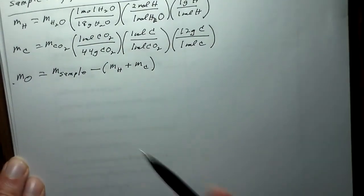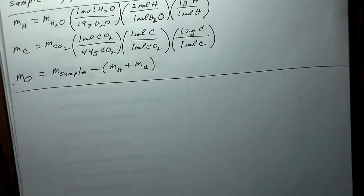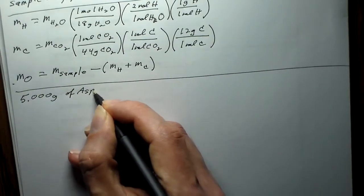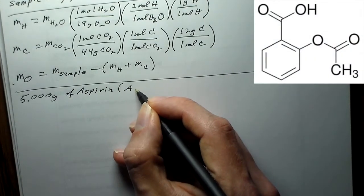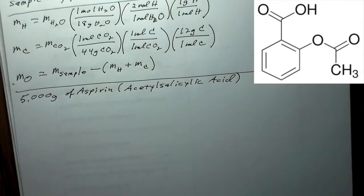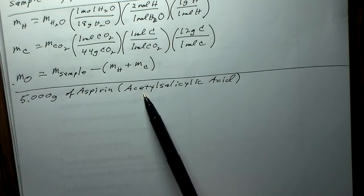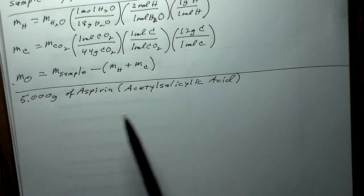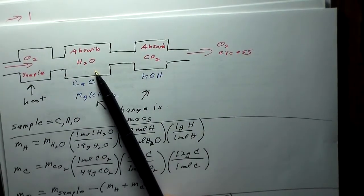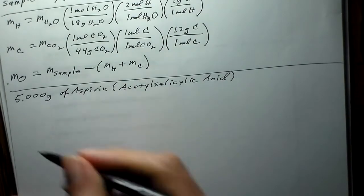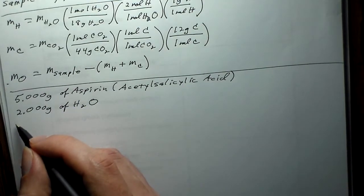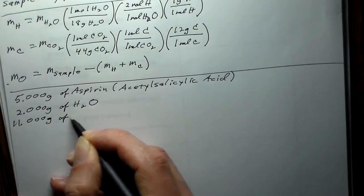Now we'll do an example using aspirin, also called acetylsalicylic acid. We have a 5.000 gram sample of aspirin. We perform combustion analysis and find that we get 2.000 grams of H₂O and 11.000 grams of CO₂. From this data we're going to figure out the empirical formula.